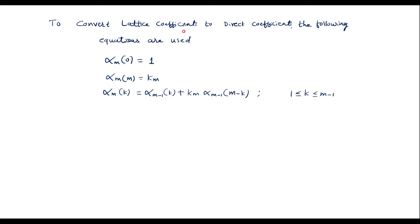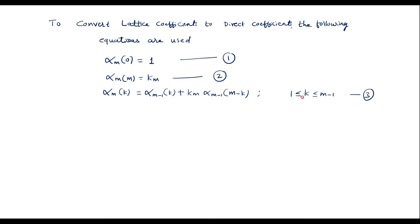To convert lattice coefficients to direct coefficients, the following three equations are used: Equation 1: alpha_m(0) = 1. Equation 2: alpha_m(m) = k_m. Equation 3: alpha_m(k) = alpha_{m-1}(k) + k_m · alpha_{m-1}(m-k), where k ranges from values greater than 1 and less than or equal to m-1.